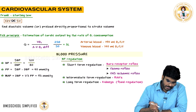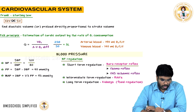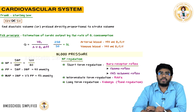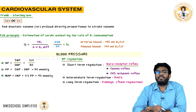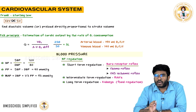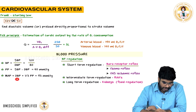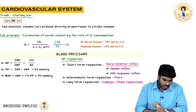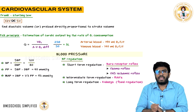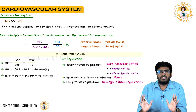The formula for mean arterial pressure is diastolic blood pressure plus one-third of the pulse pressure. Diastolic is 80 and pulse pressure is 40. One-third of 40 is about 13. So 80 plus 13 is 93 mmHg — that is the mean arterial pressure, MAP = 93 mmHg.